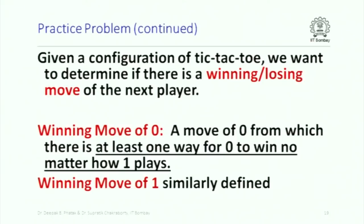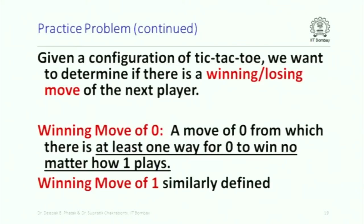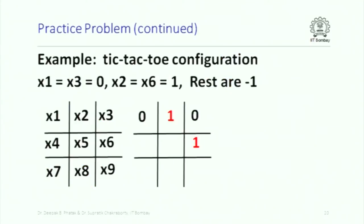Given a configuration, we want to determine if there is a winning or losing move. A winning move of zero is a move from which there is at least one way for zero to win no matter how one plays. A winning move is not one which immediately wins, but one which guarantees that no matter what the opponent plays next, zero will always win. A configuration example: X1 and X3 are 0, X2 and X6 are 1, rest are -1; next move is zero's.